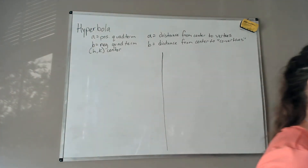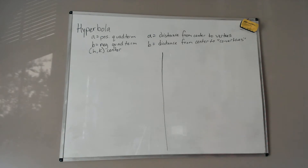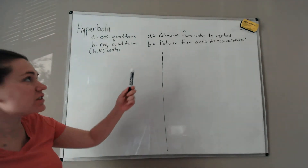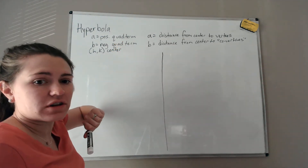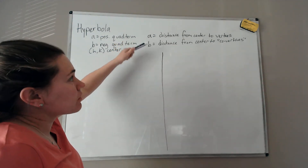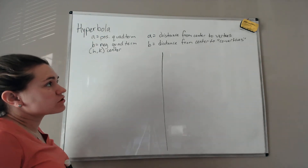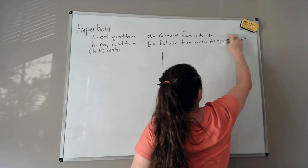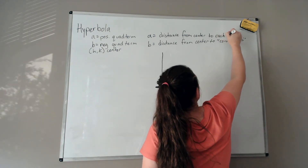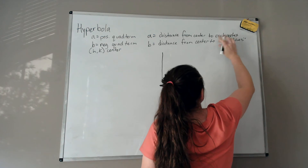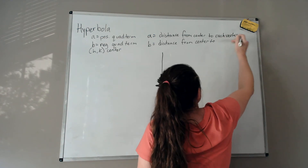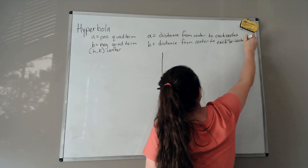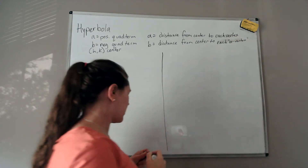The center of the hyperbola is always h, k. The value a represents the distance from the center to each vertex. b represents the distance from the center to each co-vertex — and you'll see why I have co-vertices in quotes.